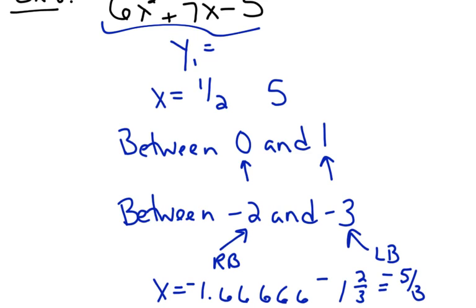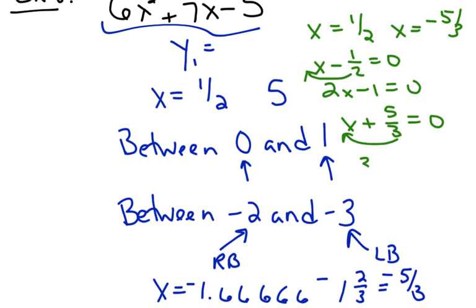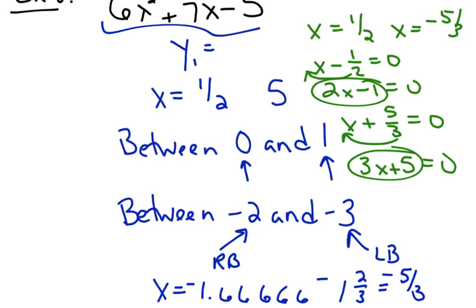So my two answers are 1 half and negative 5 thirds. If I work backwards, I get x minus 1 half equals 0 and x plus 5 thirds equals 0. I don't like fractions, so I like to rewrite those. All I did was take the denominator and write it in front of the x — that's a neat little trick. So x minus 1 half becomes 2x minus 1, and x plus 5 thirds becomes 3x plus 5. And weren't those my binomial factors when I was done with the problem? They sure were.